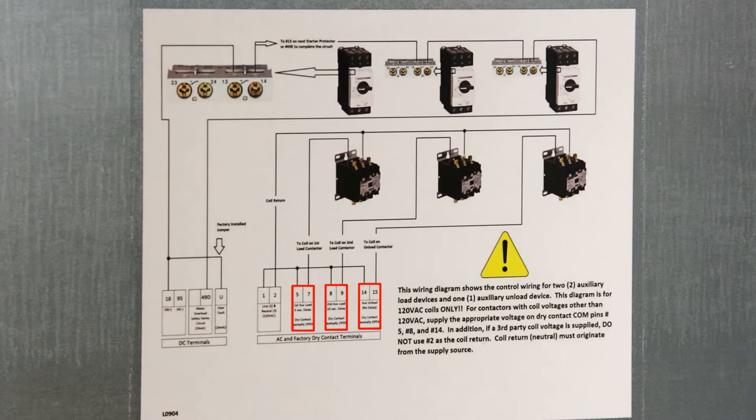Proceeding on, we have three sets of dry contacts. The first one, five and seven, being five second delay from your load system operating. So this generally would be looked at as possibly an incline auger feeding the dryer.